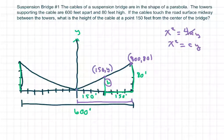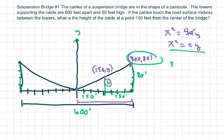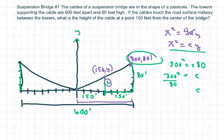The first thing we're going to do is find c. We have x² = cy, so we have 300² = c × 80. So c equals 300² divided by 80, which gives us c = 1125.